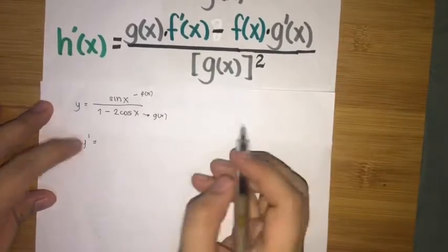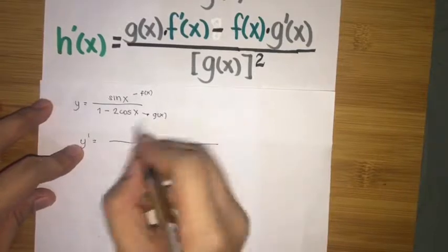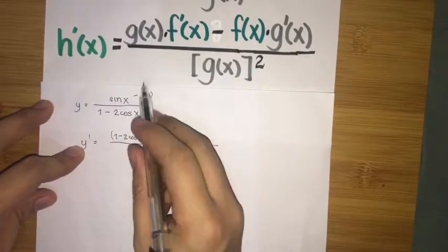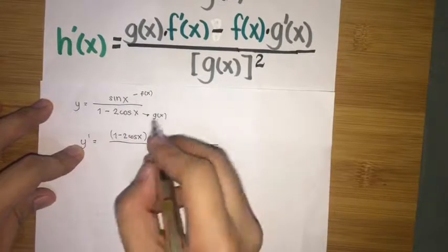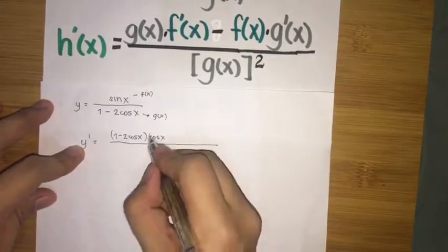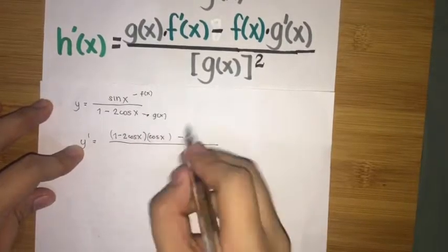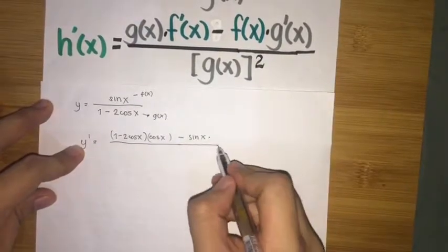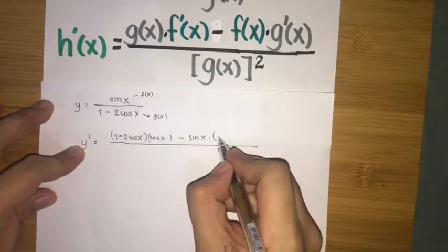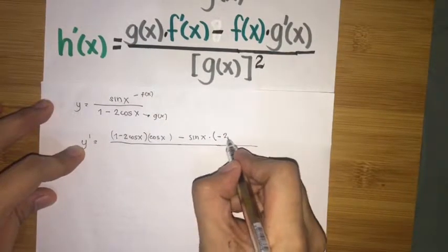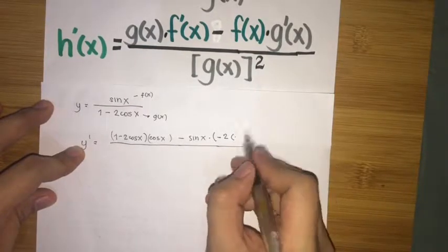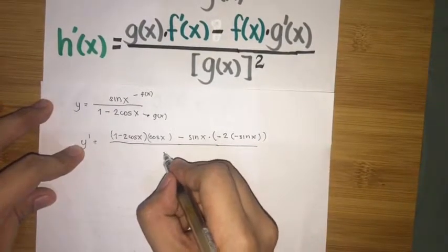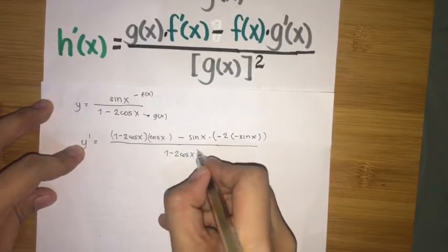So y prime equals: copy g of x, which is 1 minus 2 cos x, multiplied by the derivative of f of x — since f of x is sin x, its derivative is cos x — minus copy f of x which is sin x, times the derivative of g of x. The derivative of 1 minus 2 cos x is negative 2 times negative sin x, which is positive 2 sin x. All over 1 minus 2 cos x quantity squared.